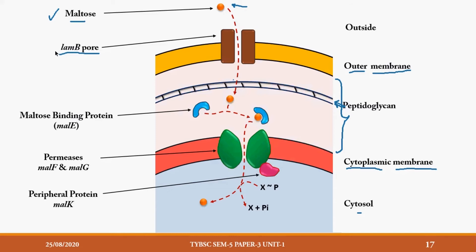Maltose lying outside crosses the outer membrane through this pore, which is called the LamB pore. It is written in small italicized letters, meaning it is a gene name. The gene is lamB and this protein is its product. In an exam, if they ask the name of the protein, you write capital L-a-m-B. The gene lamB codes for this outer membrane pore.